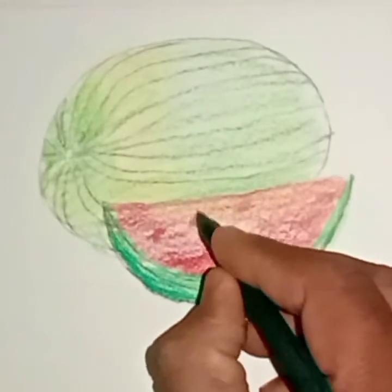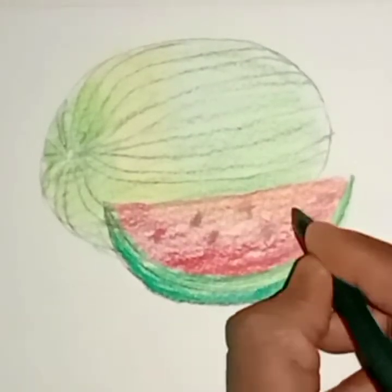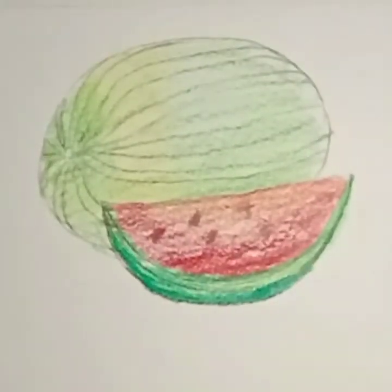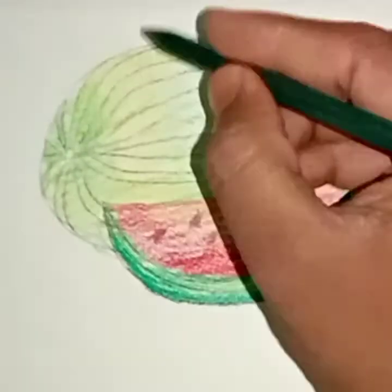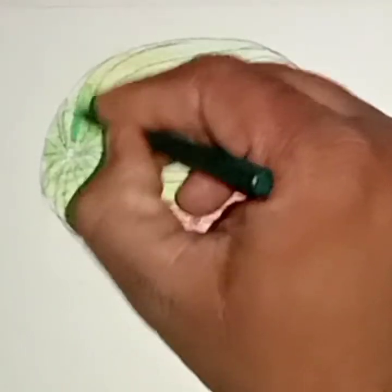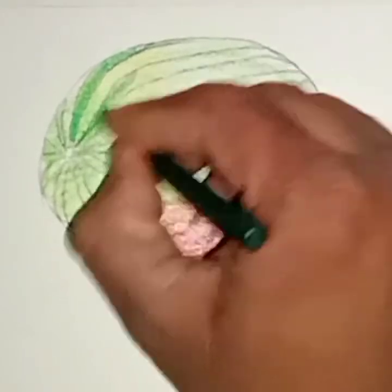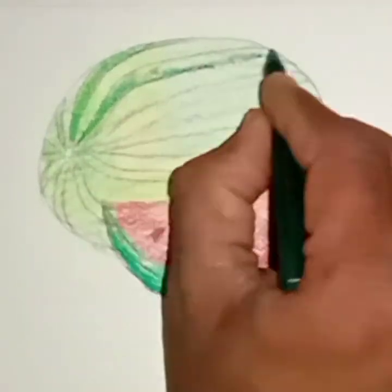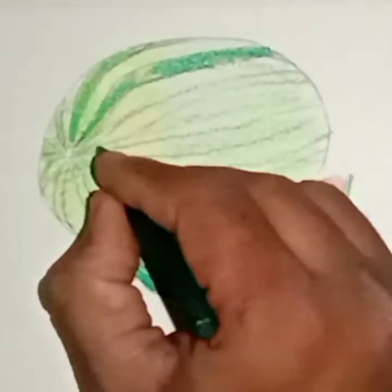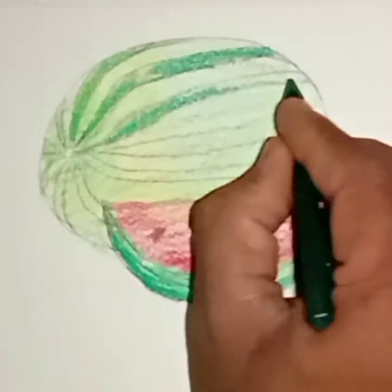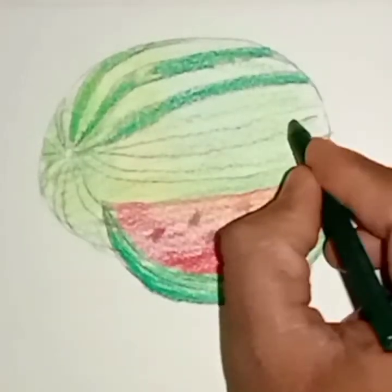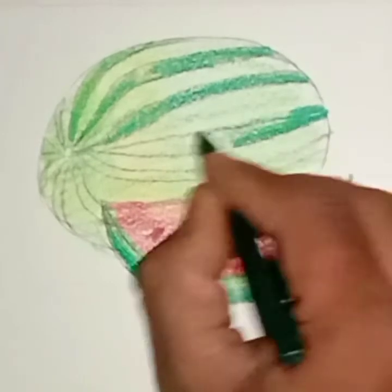Now draw a few seeds with dark green color. Like this. Now we will use the same color on the watermelon. One stripe we will fill with dark green color, and the second one we will leave. Like this we will finish our watermelon coloring work.